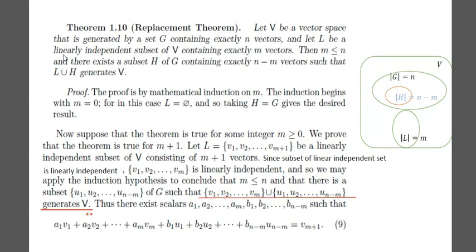We now apply the induction hypothesis. We get that m is less than or equal to n, and there is a subset {U1, U2, ..., U(n−m)} of G such that {V1, ..., Vm} union {U1, ..., U(n−m)} generates V. Since it generates V, Vm+1 will be a linear combination of these elements. So there exist scalars A1 to Am and B1 to B(n−m) such that Vm+1 can be expressed as a linear combination of these vectors.